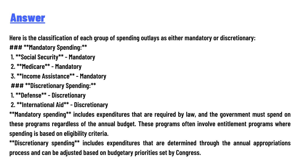Mandatory spending includes expenditures that are required by law, and the government must spend on these programs regardless of the annual budget. These programs often involve entitlement programs, and spending is based on eligibility criteria. Discretionary spending includes expenditures that are determined through the annual appropriations process and can be adjusted based on budgetary priorities set by Congress.